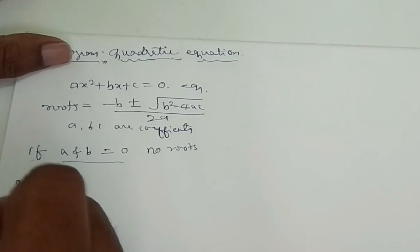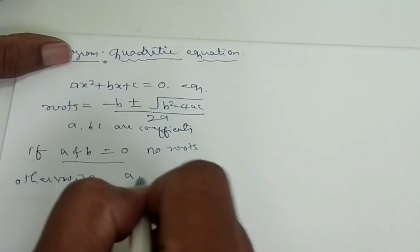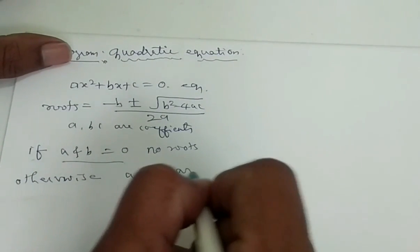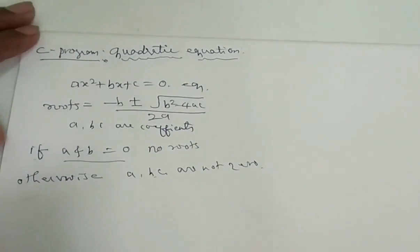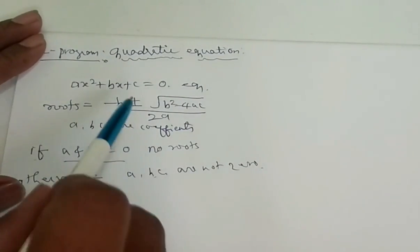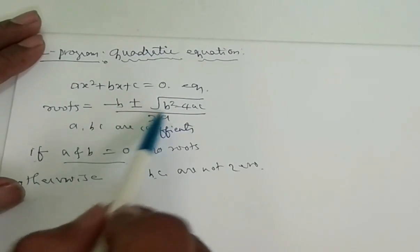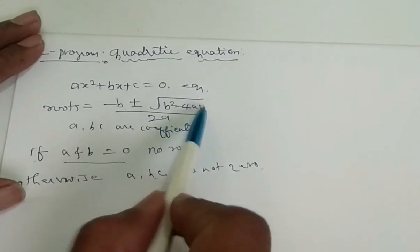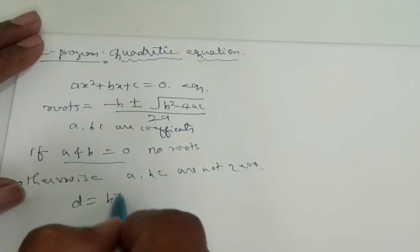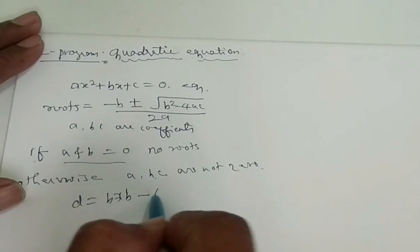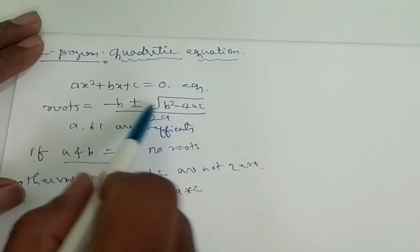Otherwise represents the case where A, B, C values are not 0. At that point, the roots depend on the term B squared minus 4AC. We will consider it as D, so D equals B squared minus 4AC. The roots depend on this D value.